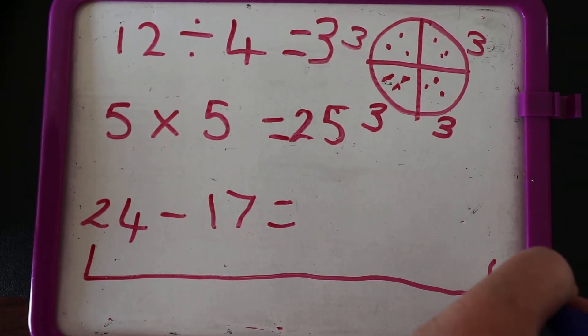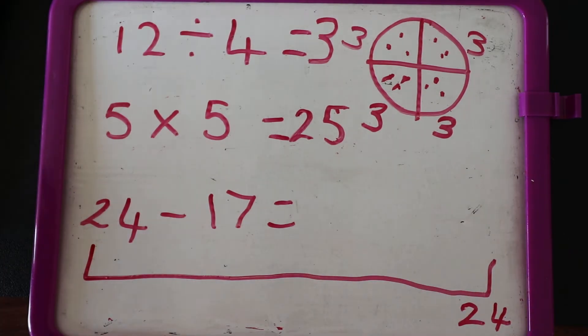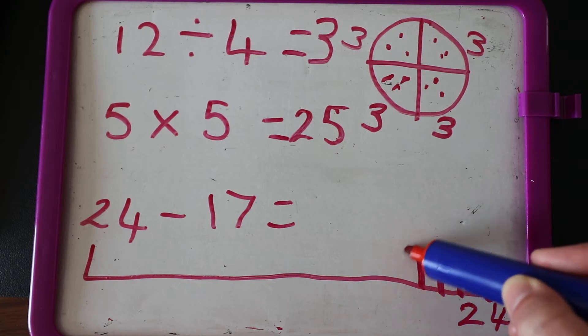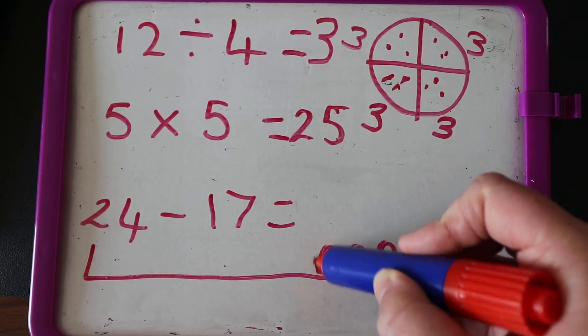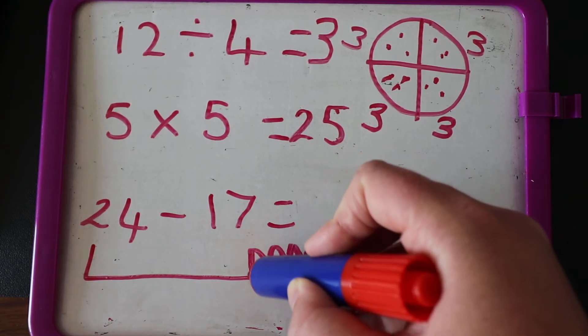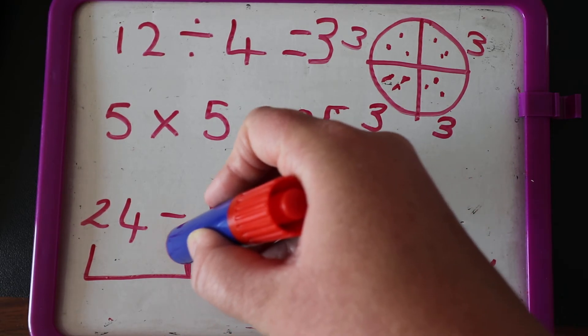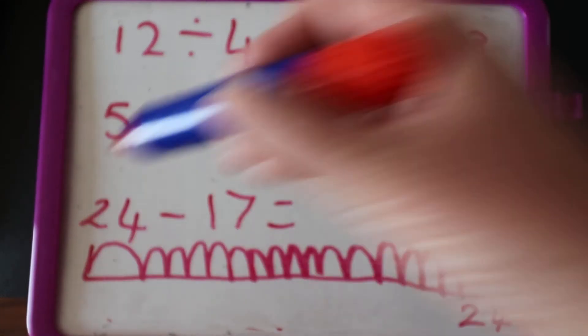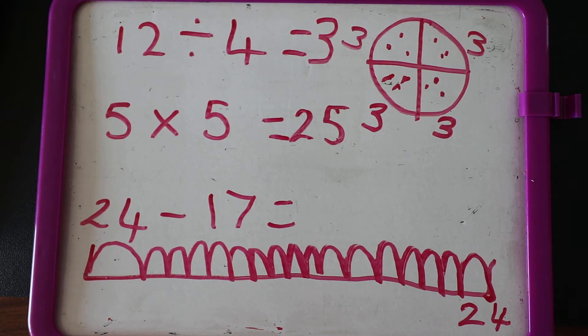Ready, I'm going to do 17 jumps. One, two, three, four, five, six, seven, eight, nine, ten, eleven, twelve, thirteen, fourteen, fifteen, sixteen, seventeen. Seventeen jumps. And now I need to count backwards from 24.